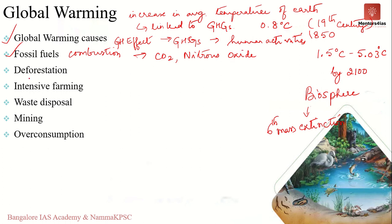The second cause is deforestation. The exploitation of forests has a major role in climate change. Trees help regulate climate by absorbing carbon dioxide from the atmosphere. When they are cut down, this positive effect is lost and the carbon stored in the trees is released into the atmosphere as carbon dioxide — a greenhouse gas.